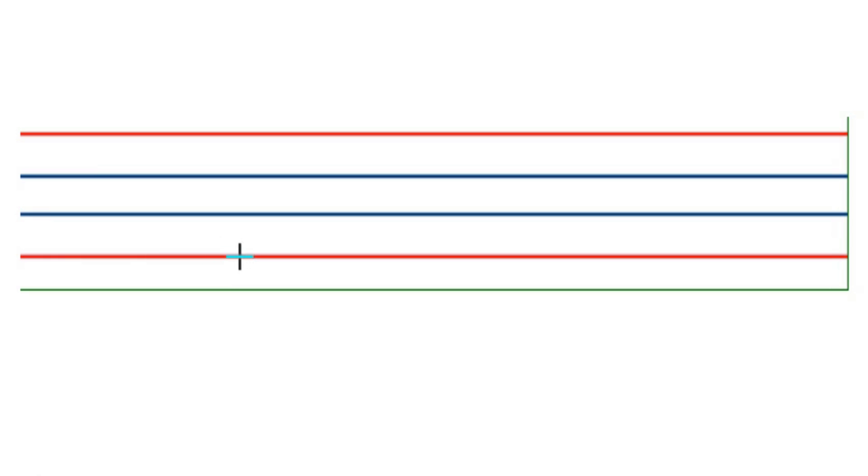The fourth line is called the ground line — because grass grows in the ground. Can you say along with me? The first line is called the skyline, the second line is called the airplane line, the third line is called the grass line, and the fourth line is called the ground line.